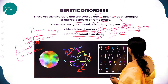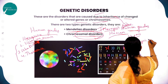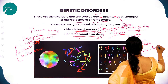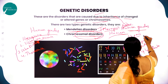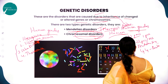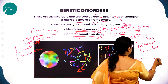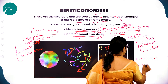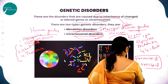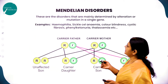As we know, humans have 23 pairs of chromosomes: 22 pairs are autosomes (44 chromosomes), and one pair are sex chromosomes — XX in females and XY in males. So the chromosomal complement is written as 44+XX = 46 in females and 44+XY = 46 in males.